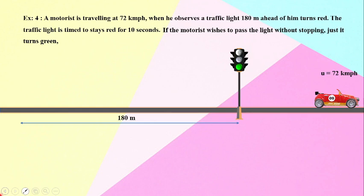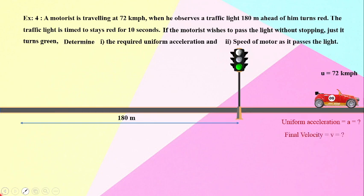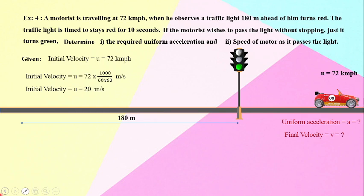You might have seen the car has moved, and by that time the signal was green. We need to find out the required uniform acceleration and the speed of the motor as it passes the signal light. Let us have the solution for this. Given: initial velocity is 72 kilometers per hour, that is equal to 20 meters per second. Distance to be traveled is 180 meters. Time taken to travel this 180 meters is given equal to 10 seconds because he has to pass before the signal turns green.